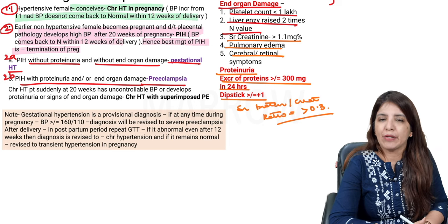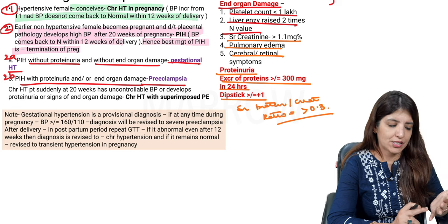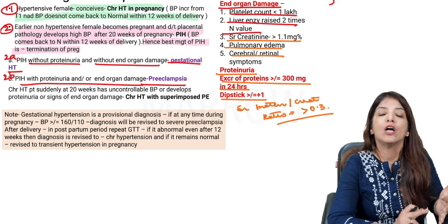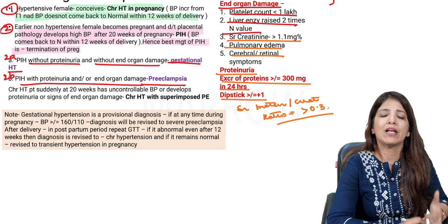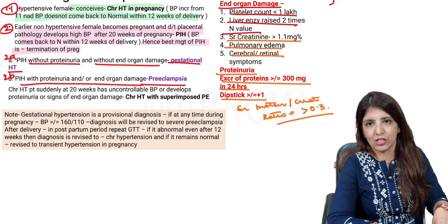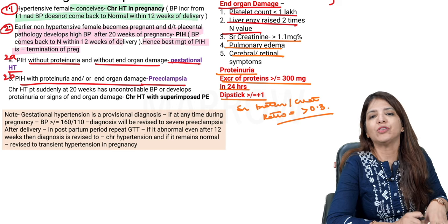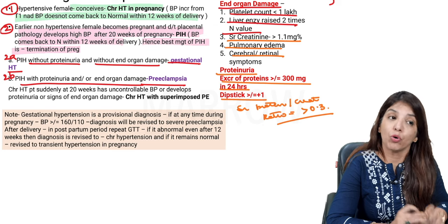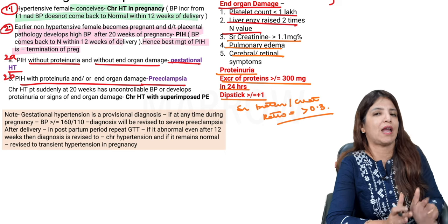Please remember: if asked about the screening test for hypertension in pregnancy or PIH, there are two screening tests — number one, check the BP, and number two, check for proteinuria by dipstick. Both should be done in all pregnant females at every antenatal checkup. Proteinuria is never normal during pregnancy.